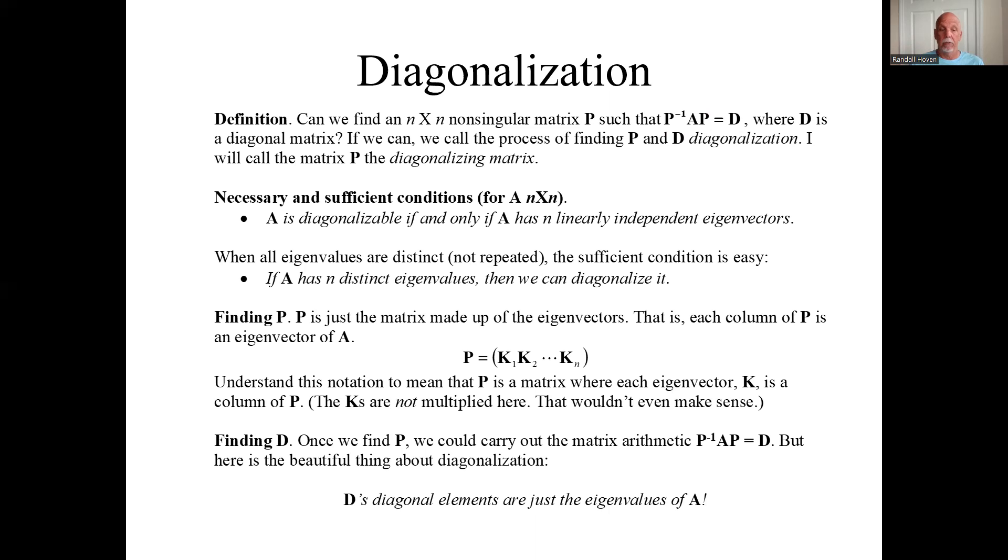How do you find the P once you say that it is diagonalizable? D is just made up of the eigenvectors. Each of these k's is an eigenvector. Remember the eigenvectors were column matrices or column vectors. So each column of this P is that or those k's.